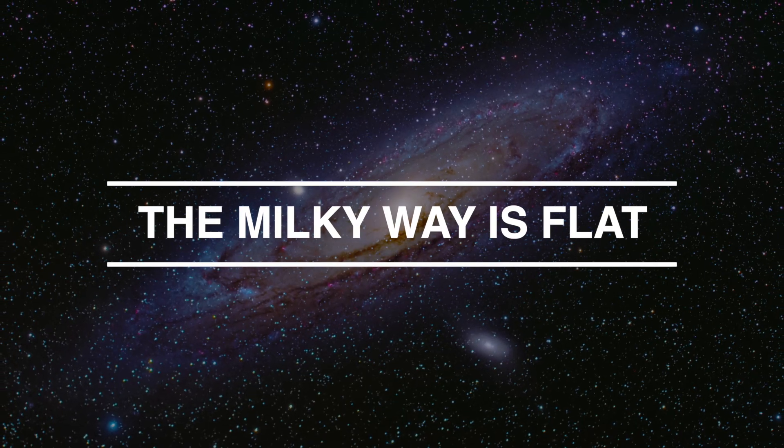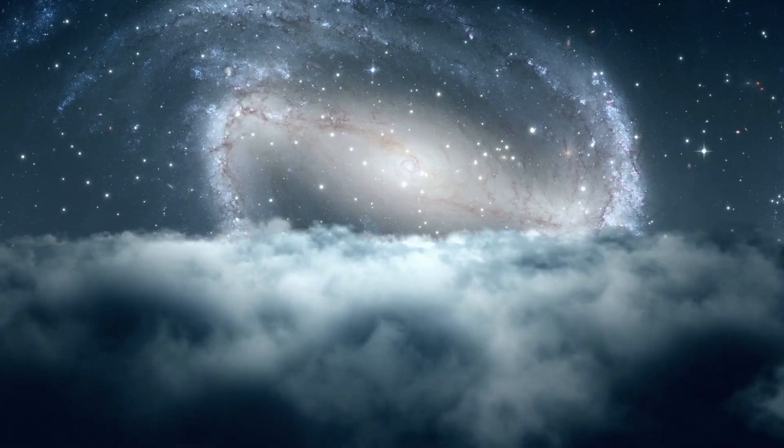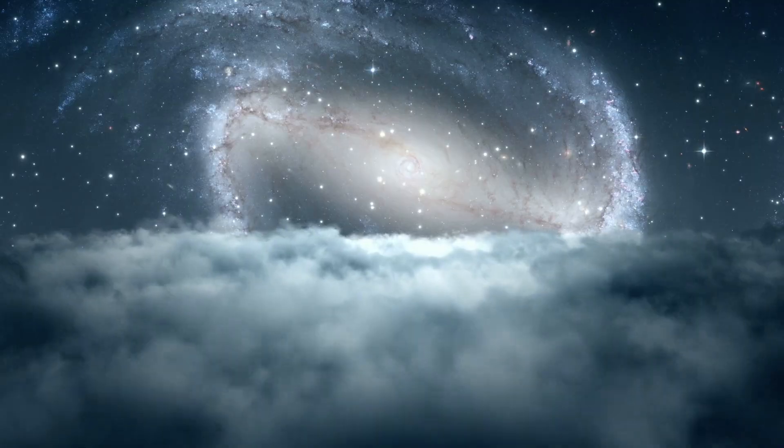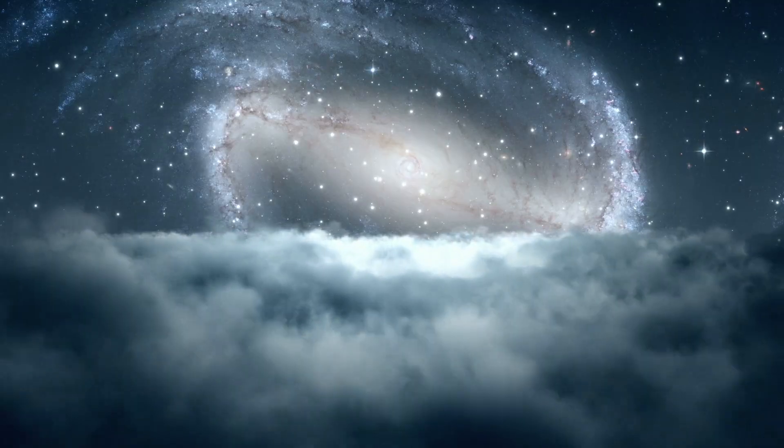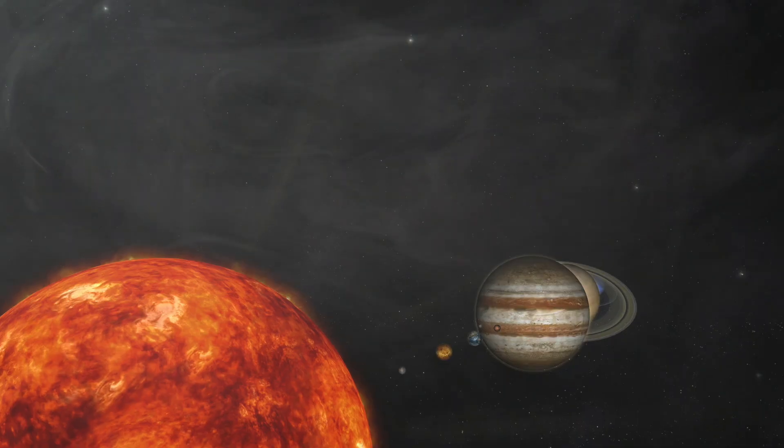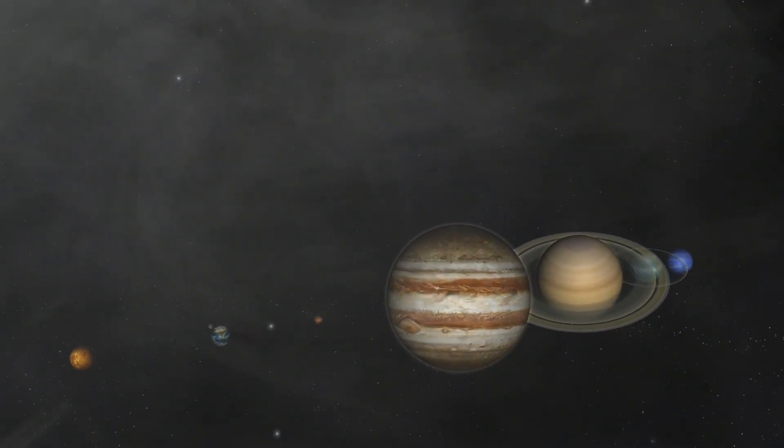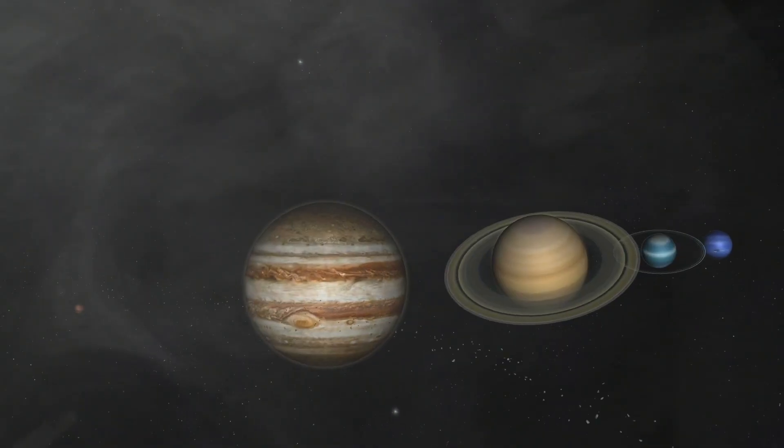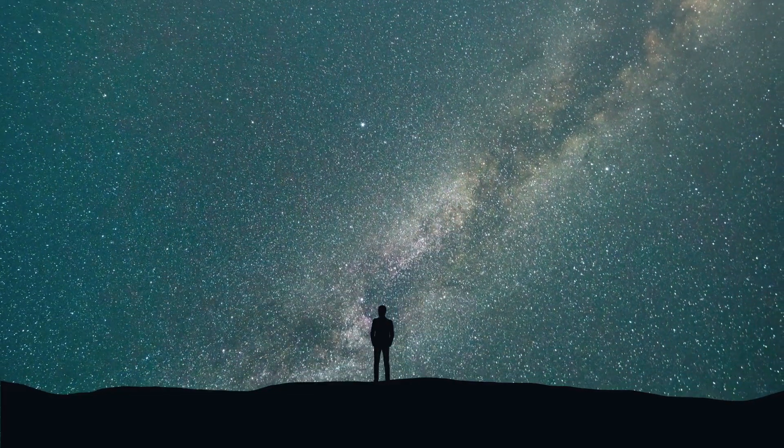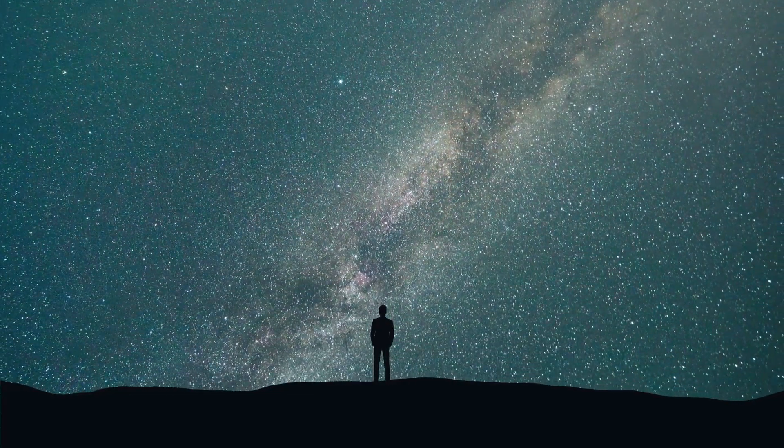The Milky Way is flat. Our galaxy is about 100,000 light years long and 1,000 light years wide. Within this generally flat, though slightly distorted disk, the Sun and its planets are enveloped in lumps of gas and dust, more than 26,000 light years away from the turbulent heart of our galaxy.